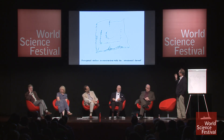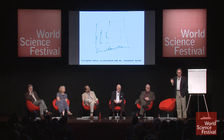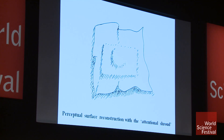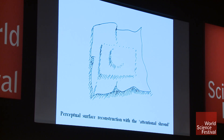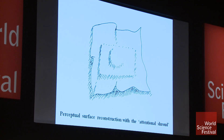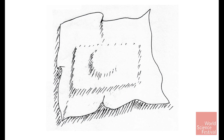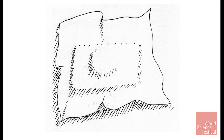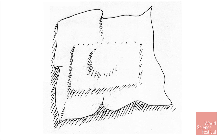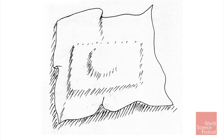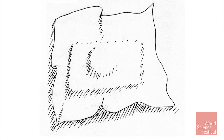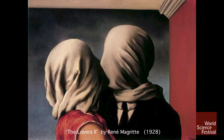The surface reconstruction is achieved by a thing I call the attentional shroud. It's as though you have an object and you throw a net over it. It has another famous example — I don't know if you've come across this.